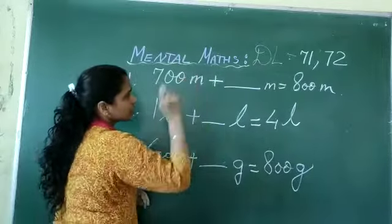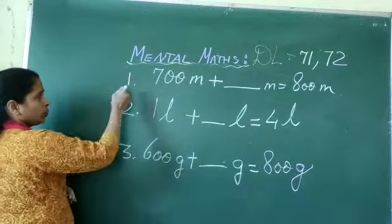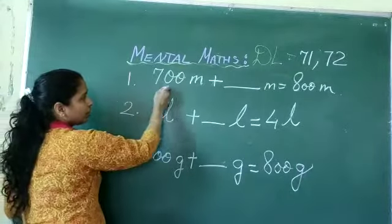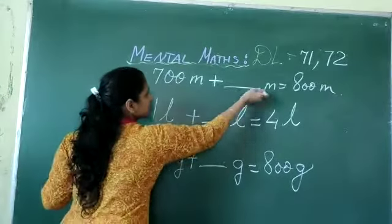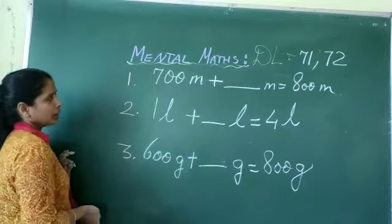Mental Maths Drill Lesson 71-73. Question 1: 700 meter plus dash meter equals 800 meter.